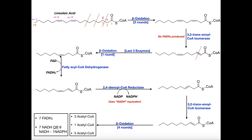Now we have one double bond left, and it doesn't look like it would interfere much. So we go ahead and perform the first reaction of the next round of beta-oxidation — the acyl-CoA dehydrogenase. This gives us an FADH2 as we would expect and puts a trans-double bond right here between positions two and three. However, we cannot simply just do beta-oxidation on this, because we have another double bond adjacent to it between positions four and five. We need to get rid of this one.